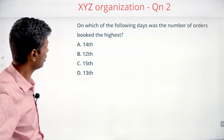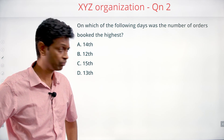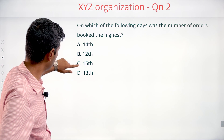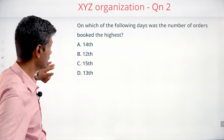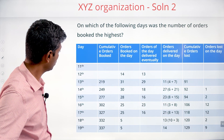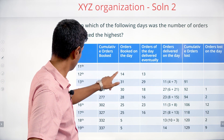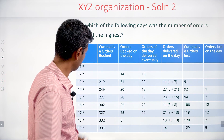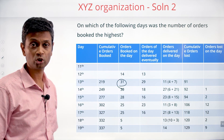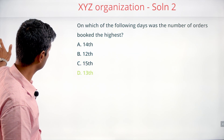Question: Among 12th, 13th, 14th, and 15th, on which day were the highest number of orders booked? Looking at the numbers: 13th had 31 orders booked, which is the highest.